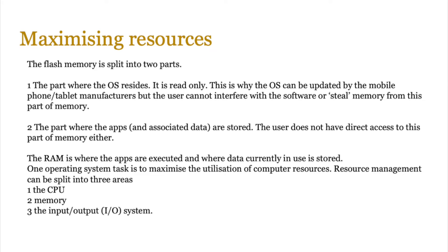The reason mobile devices load instantaneously is that their flash memory is split into two parts. Part one — where the operating system resides — is normally read-only; only the manufacturer can flash or update it. This reserved area ranges from 8–10 GB up to 20–30 GB depending on the device. The second part stores all apps and associated user data, and the user does not have direct access to either part — access is via the operating system.